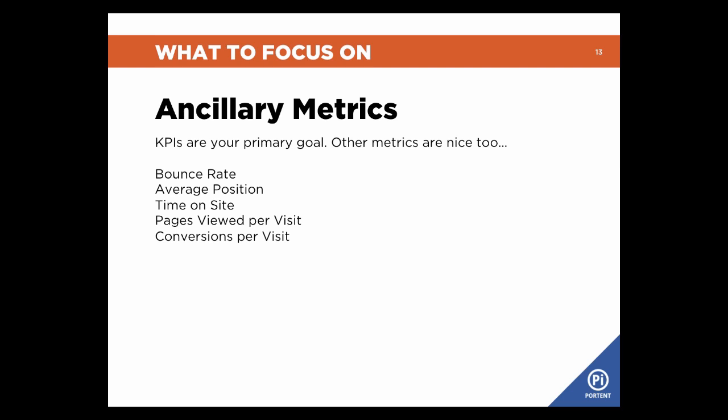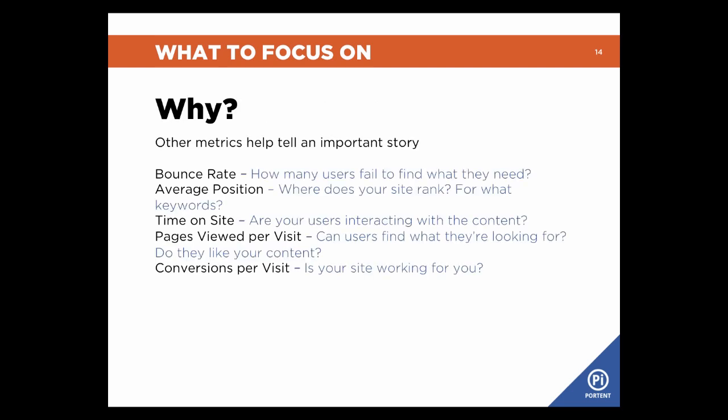There are some ancillary metrics that are really helpful in telling a story and helpful in telling your KPI story. There's bounce rate, average position, time on site, pages viewed per visit, and conversions per visit. Bounce rate: how many users fail to find what they need? Average position: where does your site rank and for what keywords? Conversions per visit: is the site working for you, or are you just getting people to that product page or free demo and then no one's signing up? Because if no one's signing up, we've got a bigger problem on our hands.